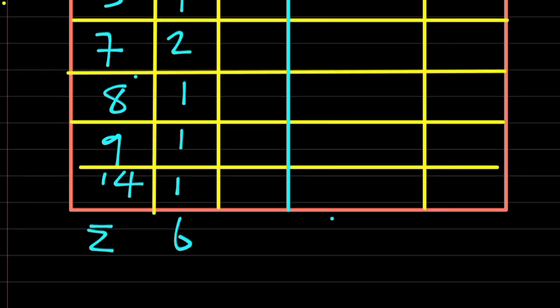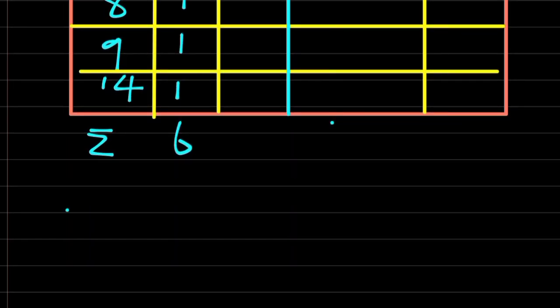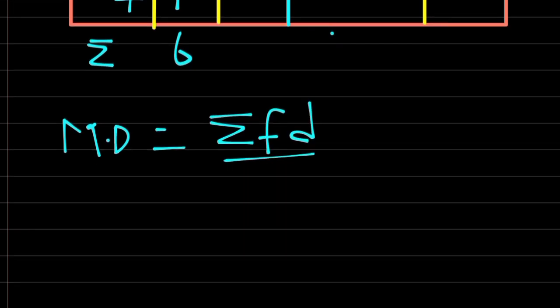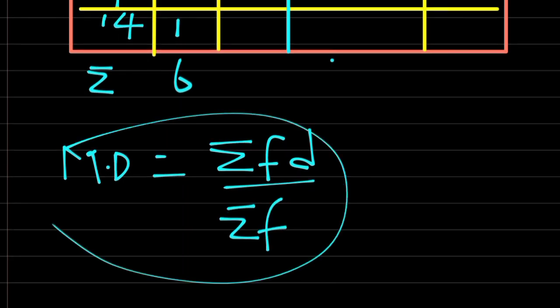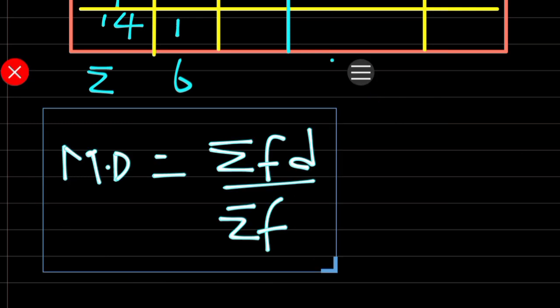Actually, the formula for calculating mean deviation is given as mean deviation is equal to summation of f of d over summation of f. But we need to calculate the mean first.